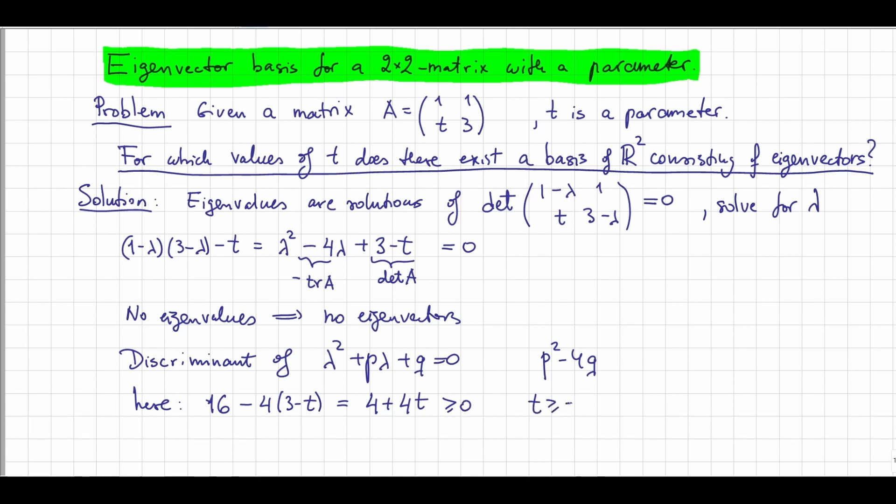In other words, t has to be larger or equal than -1. So if t is larger than -1, then the discriminant is larger than 0, so this quadratic equation will have two solutions. Therefore, we'll have two eigenvalues, and for each eigenvalue, we'll have an eigenvector. They will be linearly independent, so therefore we'll have a basis.